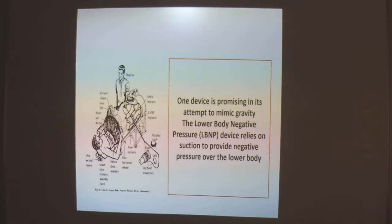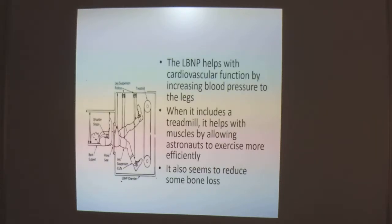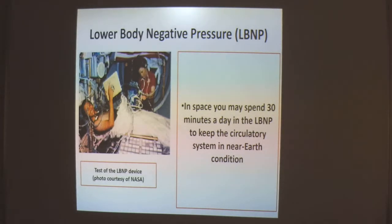This is the lower body negative pressure (LBNP) device, which relies on suction to provide negative pressure over the lower body. If an aviator tightens their abdominal muscles to an extreme degree and leans forward to compress the abdomen, some of the pulling of blood into the large vessels of the abdomen can be prevented, thereby delaying the onset of blackout. This LBNP device helps with cardiovascular function by increasing blood pressure to the legs, and when it includes a treadmill, it helps muscles by allowing astronauts to exercise more efficiently. It also seems to reduce some bone loss. In space, a person can spend 30 minutes a day in LBNP to keep the circulatory system in near-Earth conditions.